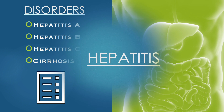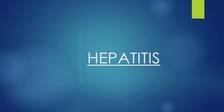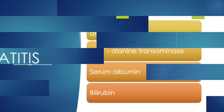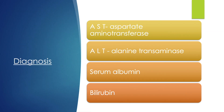The disorders we'll discuss are hepatitis A, B, C, and cirrhosis. Hepatitis refers to the inflammation of the liver. There are various diagnostics to assess hepatic deficiencies: AST (aspartate aminotransferase) and ALT (alanine transaminase) are liver enzymes that detect liver damage — an increased level indicates damage and these enzymes will be released into the bloodstream. A low serum albumin level may also indicate liver damage or malnutrition.